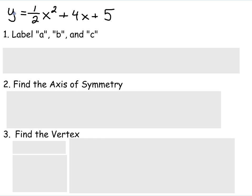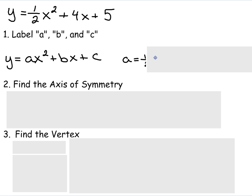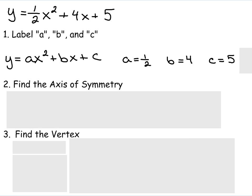As you can see, we have an equation y equals one-half x squared plus 4x plus 5. The first thing we need to do is label a, b, and c. Using the standard form y equals ax squared plus bx plus c, that means a is one-half, b is 4, and c is 5.